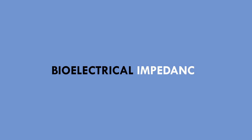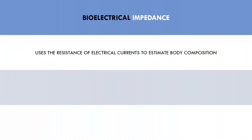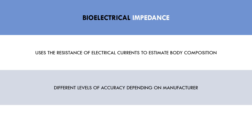The next method of assessing body composition is bioelectrical impedance. This is a method where electrical currents flow through the body, and based on the resistance of the currents, body composition is estimated. Depending on the manufacturer of the technology, bioelectrical impedance can be more or less accurate. However, most machines are probably not accurate enough to reliably detect minute changes in muscle and fat that would occur during a resistance training program.